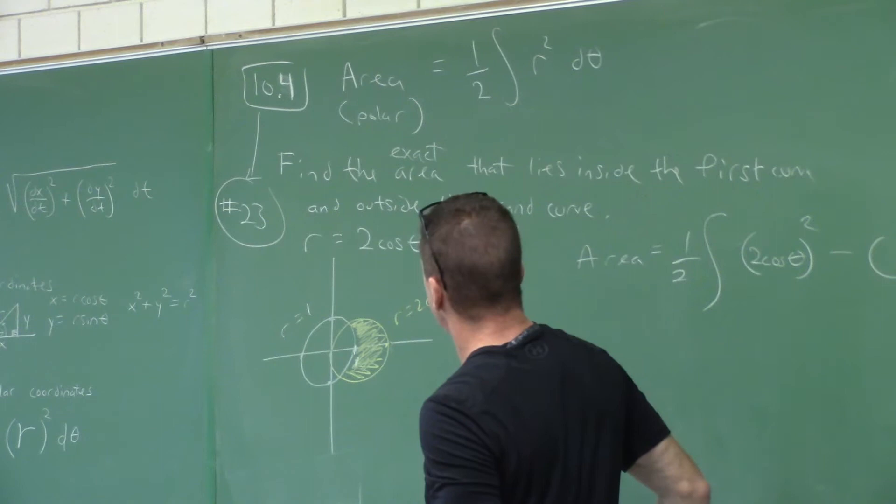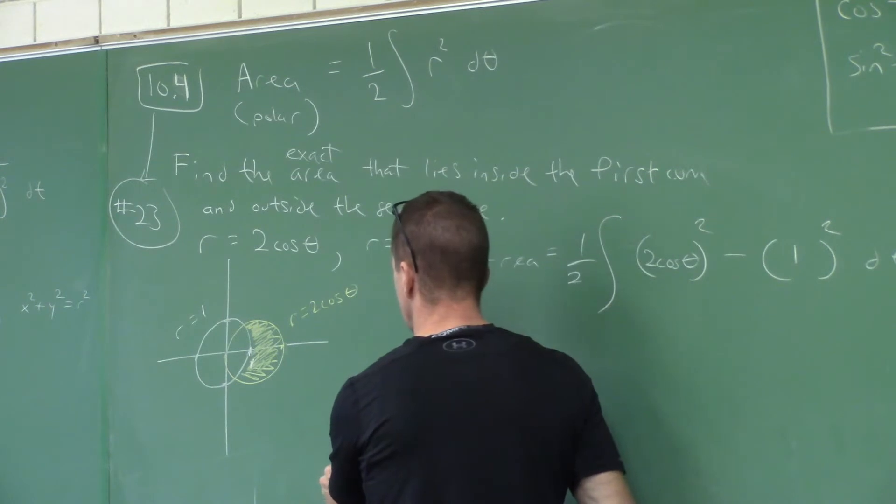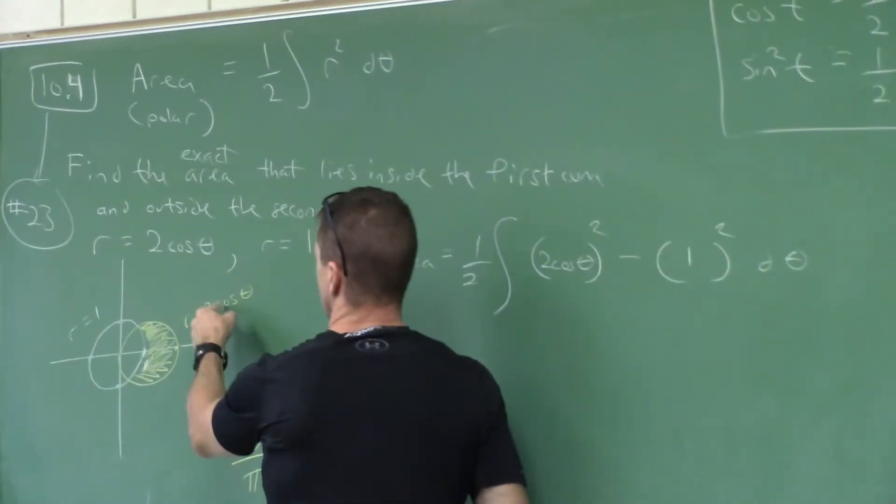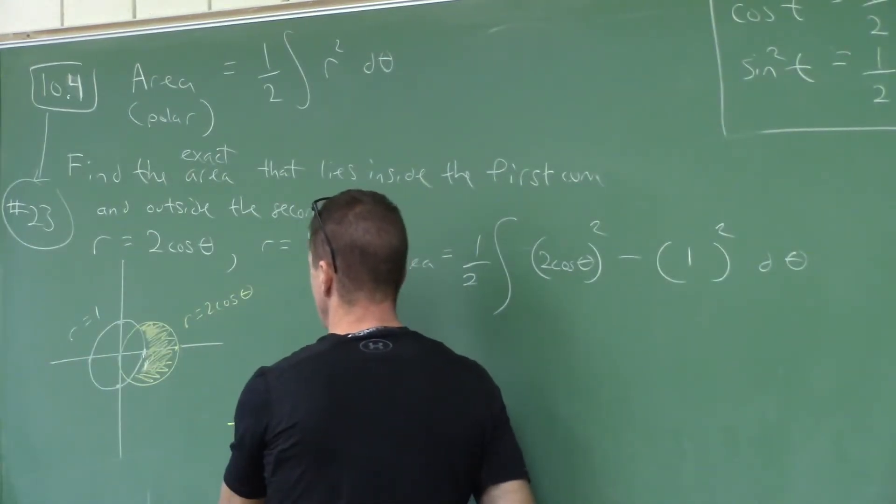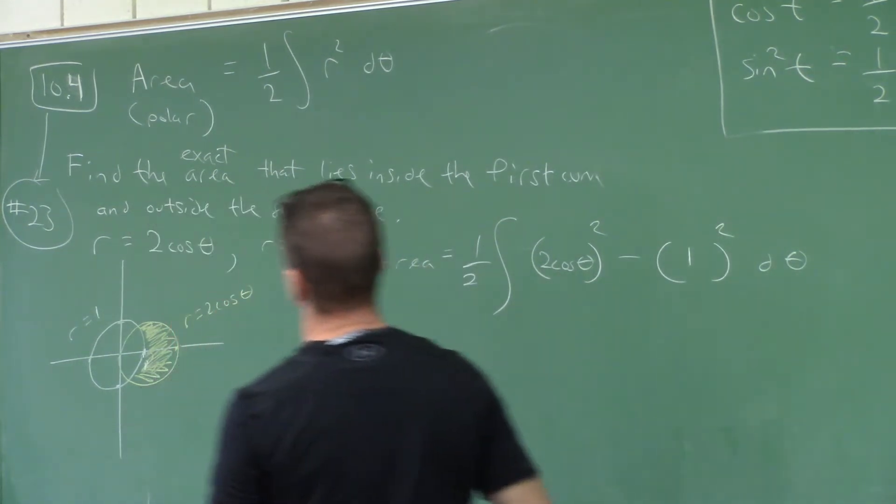You can just check. At zero, it's a two. What's going on at pi? Negative two and all that.